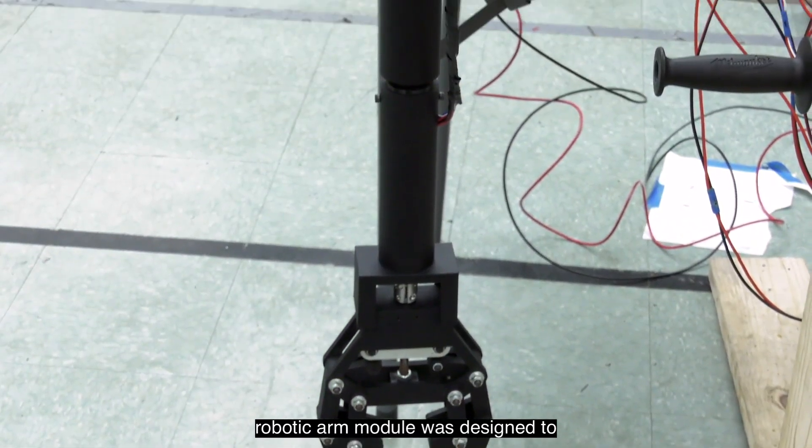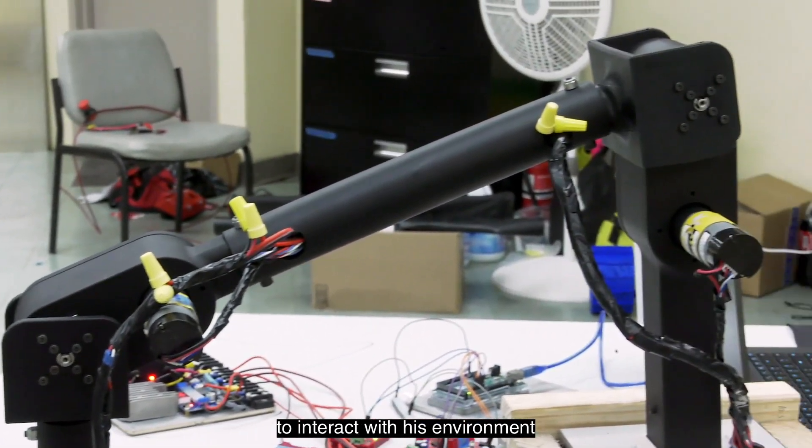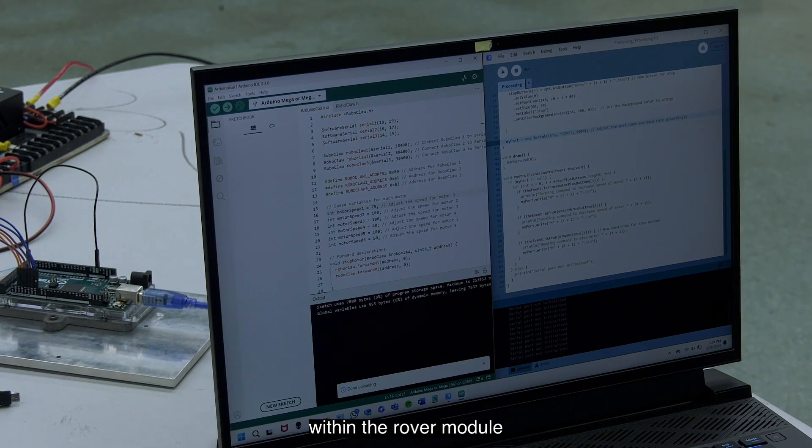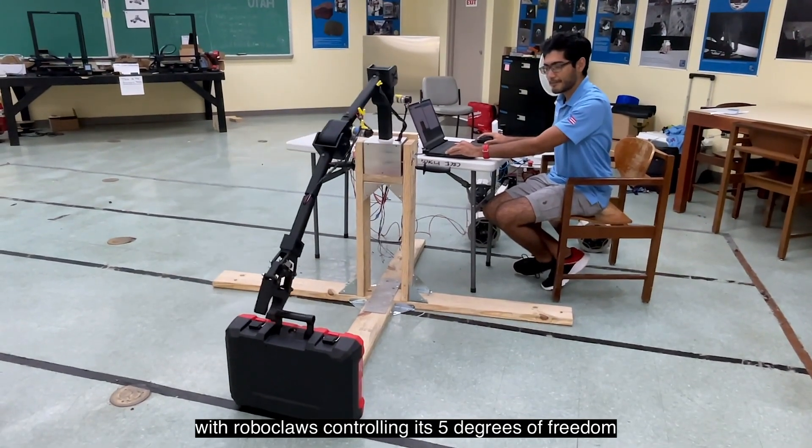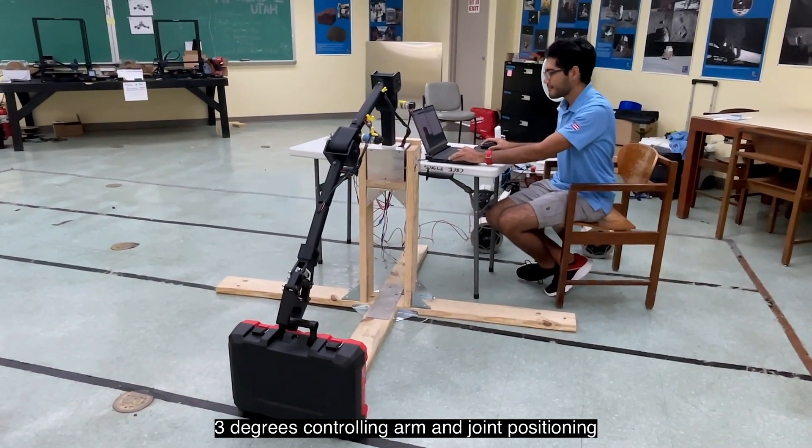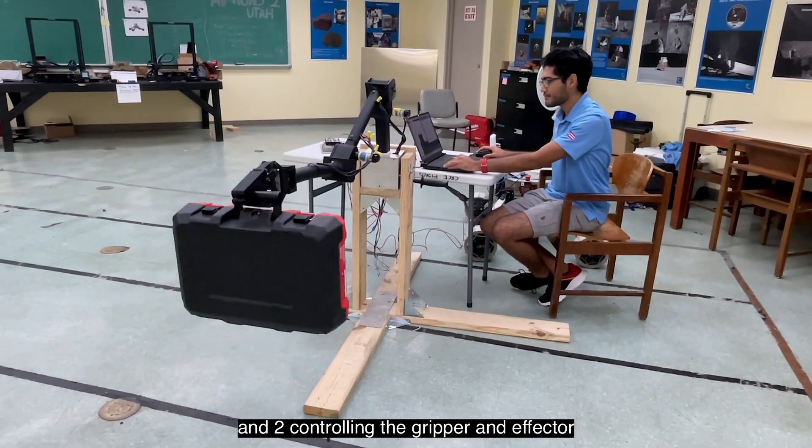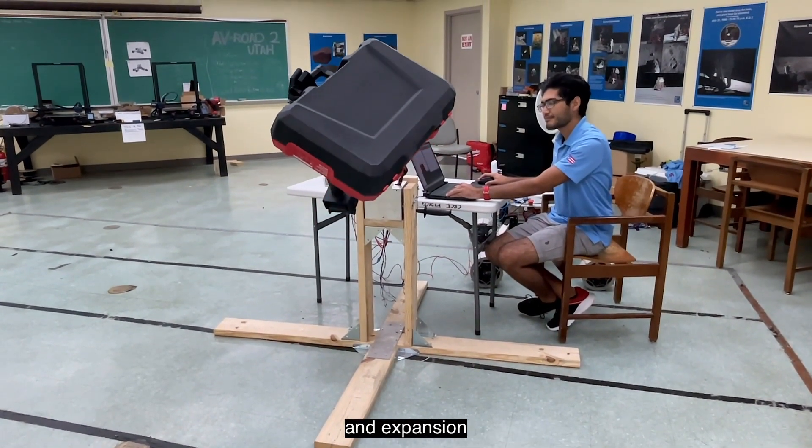The robotic arm module was designed to replicate as much movement as a human arm to interact with its environment and stay within the constraints of movement and stability within the rover module. The arm is capable of 1.2 meters of reach with Roboclaus controlling its 5 degrees of freedom, 3 degrees controlling arm and joint positioning, and 2 controlling the gripper end effector, one for rotational position and the other controlling appendage contraction and expansion.